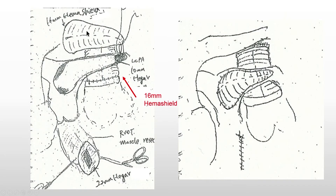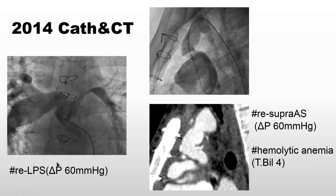Looking at the operation record, the situation was very bad. The ascending aorta was injured during that period, so the ascending aorta was replaced with an artificial graft. Patch material was also placed on the left pulmonary arteries. So the ascending aorta was replaced with artificial graft and the left PA received a big patch.